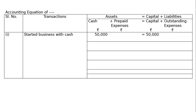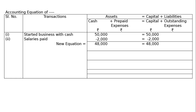Second transaction: salary is paid. It is an expenditure. Cash will go down and capital will go down, because we are paying means we have to reduce cash, and our capital will reduce with the payment of expenditure and will increase with income. Salary is an expenditure, so we will reduce from cash as well as from capital.